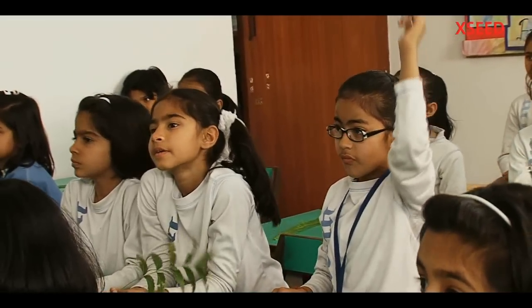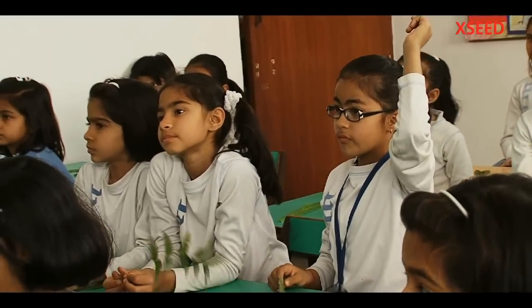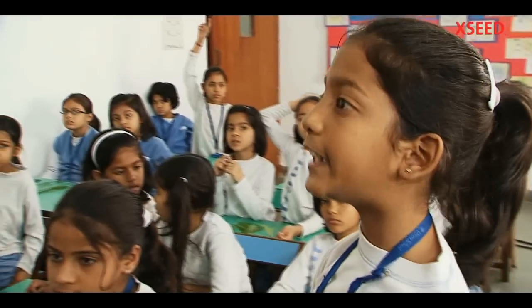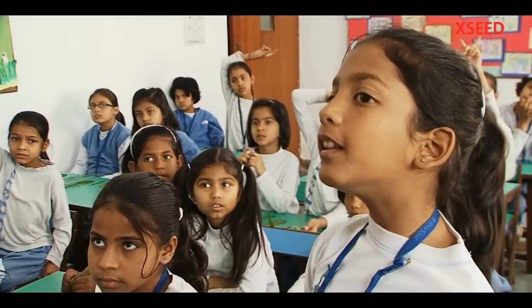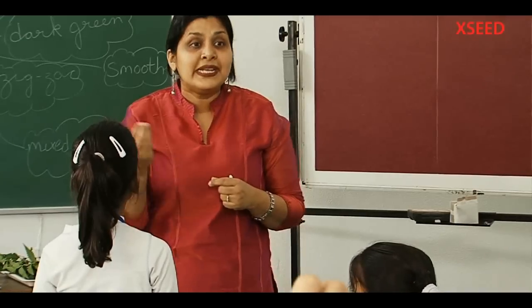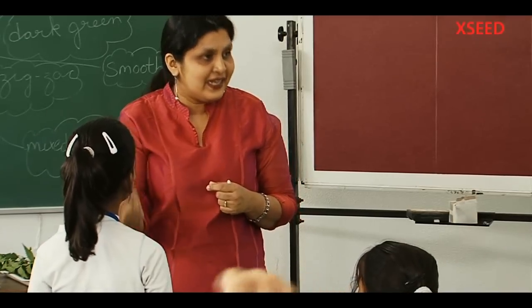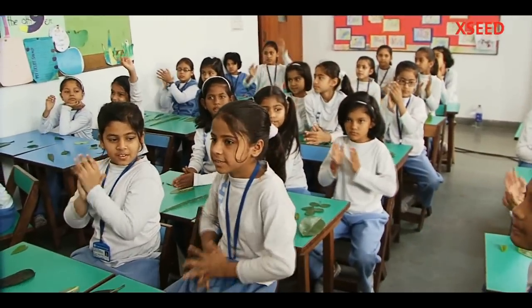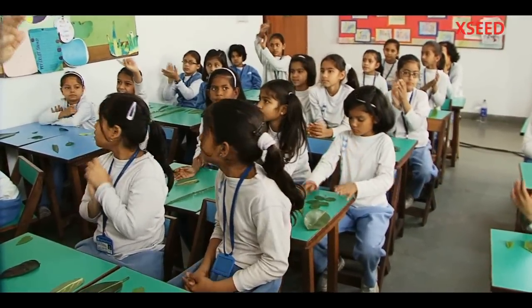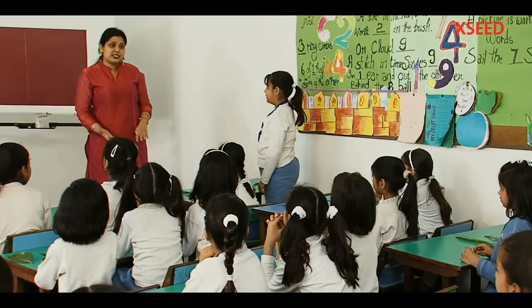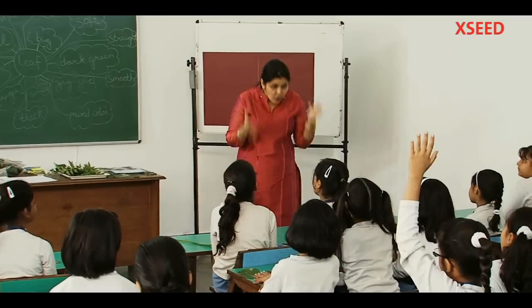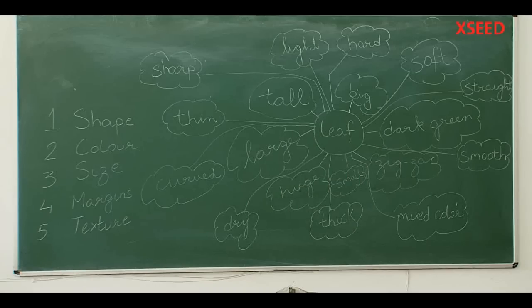What are the different things up till now that we have described about the leaf? Colour. Sizes. Margin. Shape. Material — that's smooth or rough. That's very good, can we clap for her? Some other words for material? And texture. Give me a high five. Did you know that we can describe a leaf in so many ways?